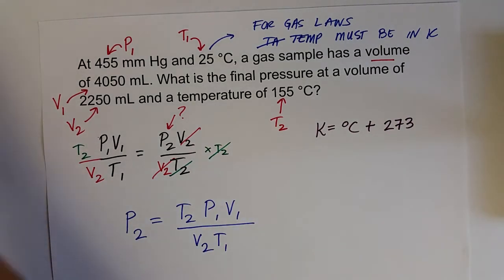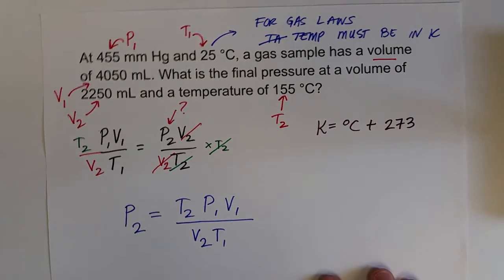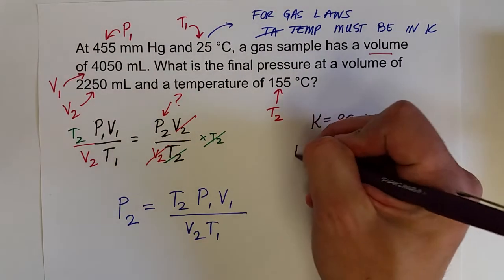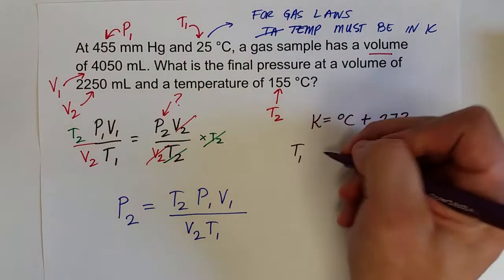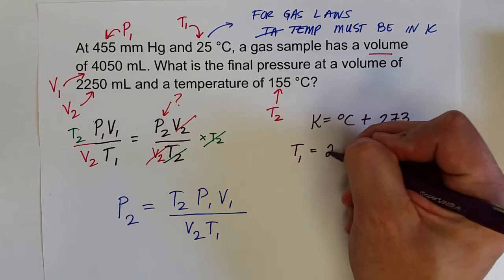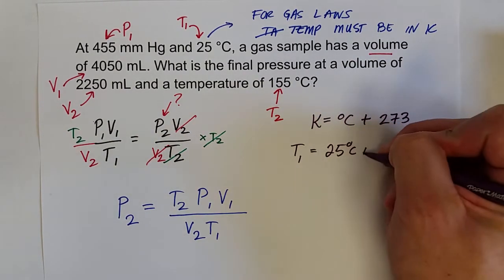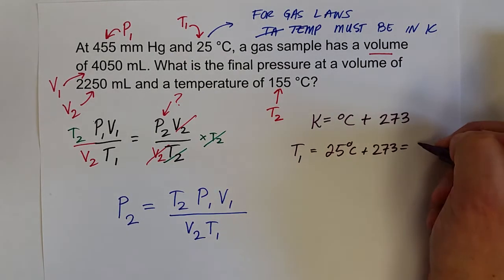So we've got P2 equals T2 times P1 times V1 all over V2 times T1. And of course, we have to remember to calculate our temperatures in Kelvin. And so T1, which was 25 degrees Celsius, plus 273, is going to equal 298 Kelvin.